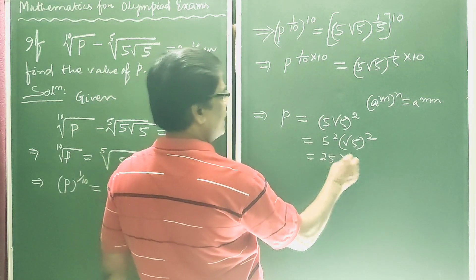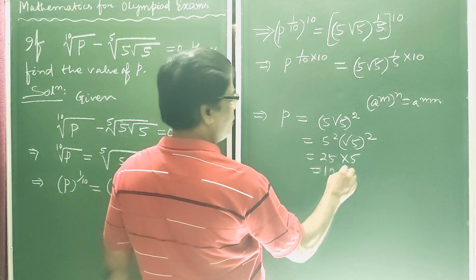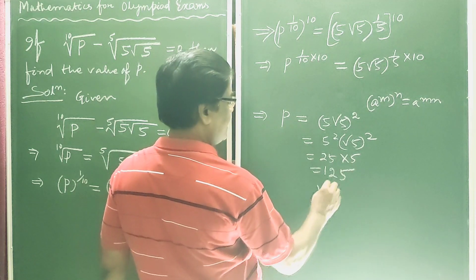This is 25 into 5 is equal to 125 answer.